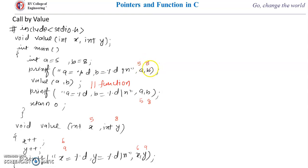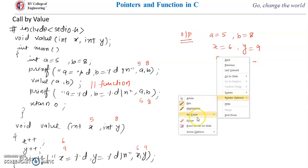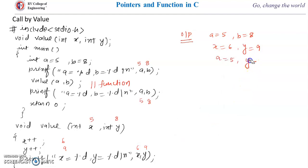Before calling the function, 5 and 8 are printed. After calling the function, when we print the value of a and b, 5 and 8 are printed again. So the output of this program will be: first, a is equal to 5 and b is equal to 8; then after the function call, x is equal to 6 and y is equal to 9; and then after finishing the function execution, control returns to main and a is equal to 5 and b is equal to 8 will be printed.